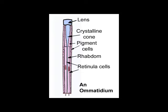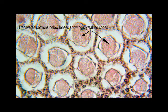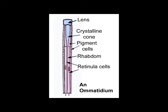If we follow a beam of light as it passes through the lens, it next encounters the crystalline cone. This is a transparent structure, made up of four cells, which directs the light down to a long thin structure, where the actual light-sensitive cells are found.